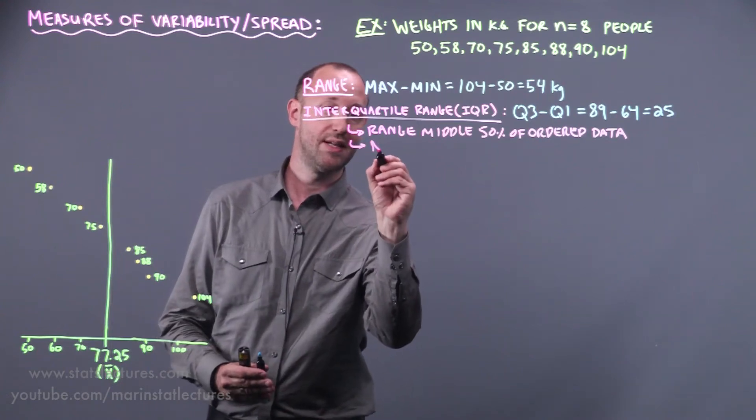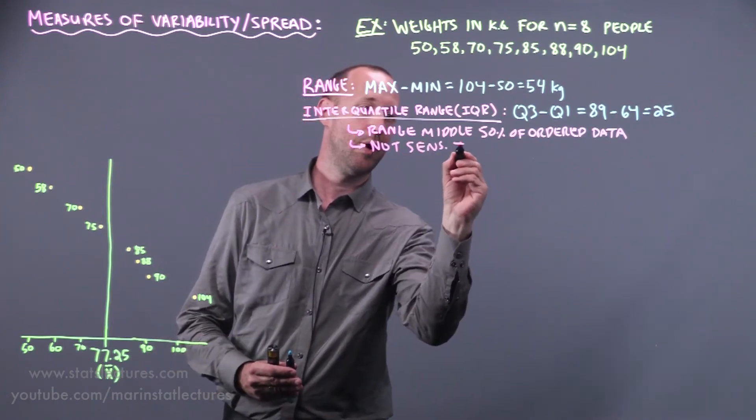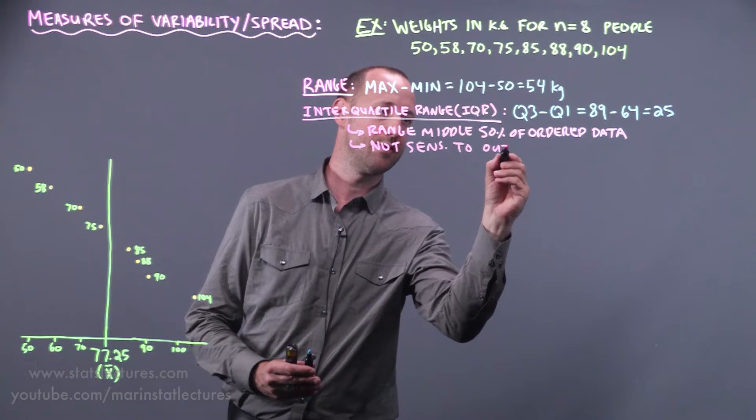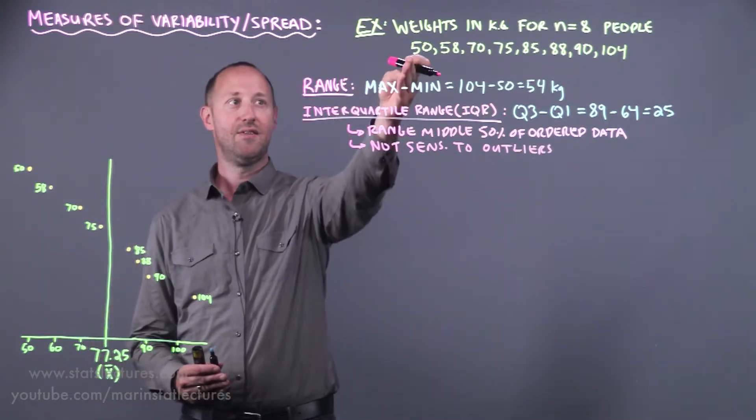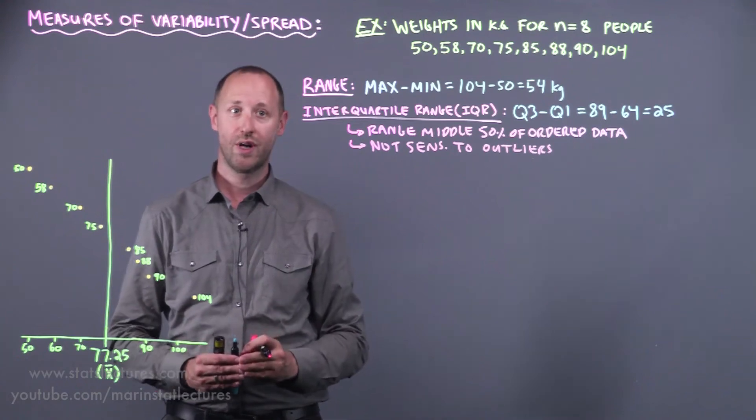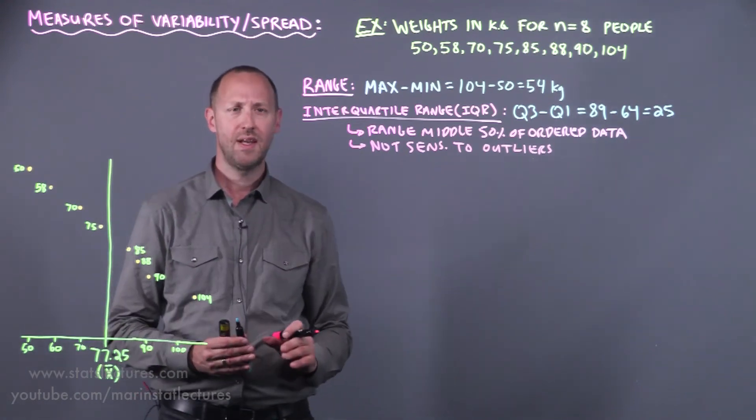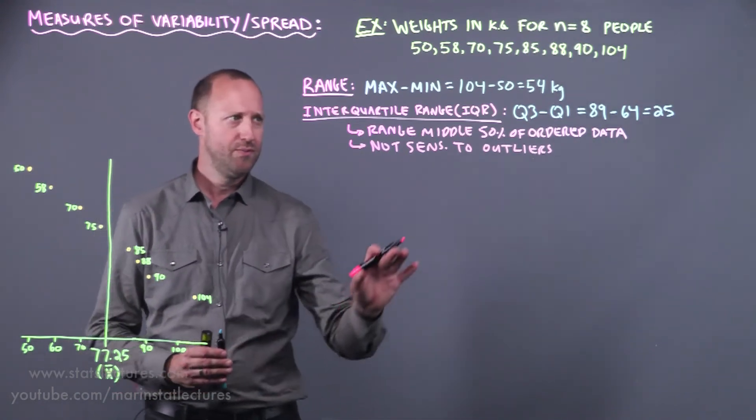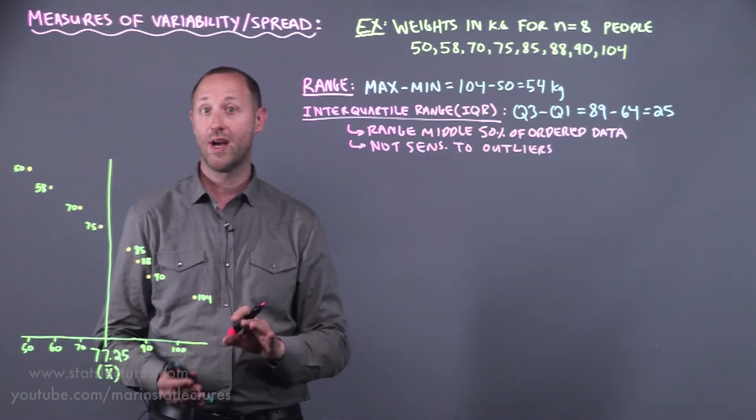A note on this is that it is not sensitive to outliers or extreme values. If this observation of 50 was 20, the IQR or interquartile range would still be the same.